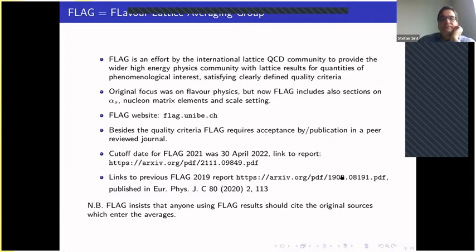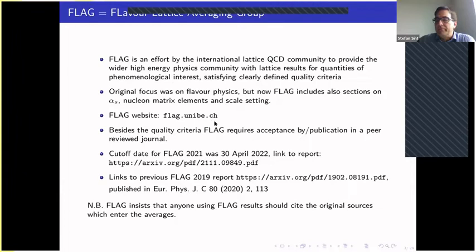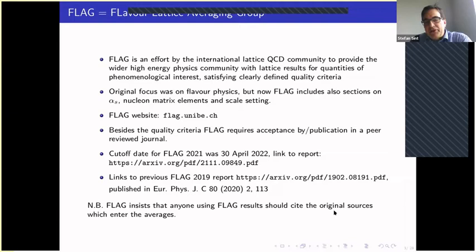FLAG 2019 is published in the European Physical Journal. This is meant to be a service to the wider physics community — a quality filter for non-experts to be able to use lattice results with qualifying criteria. FLAG still insists very much that anyone using their results should cite the original sources, as there is a great fear among lattice collaborations that FLAG basically hoovers up all the citations. The original sources are easy to find in the FLAG report.